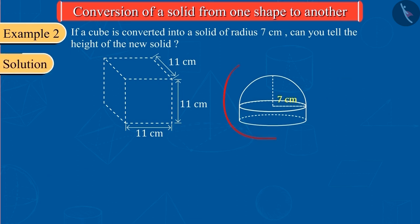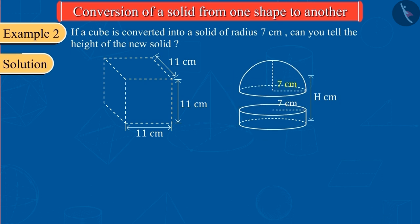Let the total height of this new solid made by Sanjana be capital H. From the picture, we can see that the new solid is made of a hemisphere and a cylinder. We can also see that the radii of these two solids are equal, i.e., 7 cm.